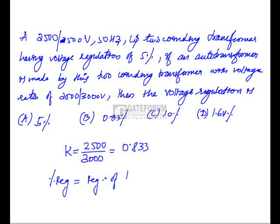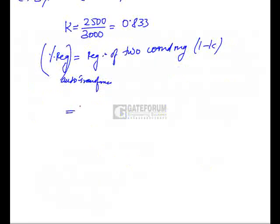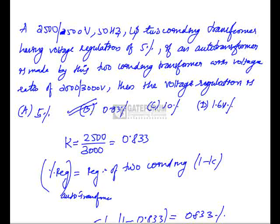Transformation ratio of this auto-transformer is 2500 by 3000, which is 0.833. Percentage regulation equals regulation of two winding transformer into one minus k. He has given percentage regulation as 5 percent, so this is one minus 0.833, you will get it as 0.833 percent. So option B is the right answer.